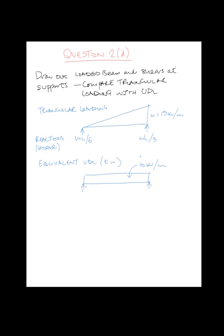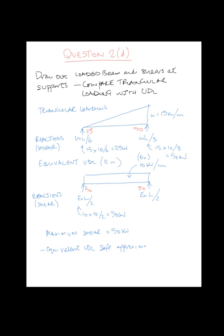Take the UDL, 10kN per meter. We take EU times L over 2, which is the shear at the end. And this comes out at 50kN on each side. So our maximum shear is 50kN. And this would cover us as an overall estimate. And this gives us equivalent UDL as a safe approximation.